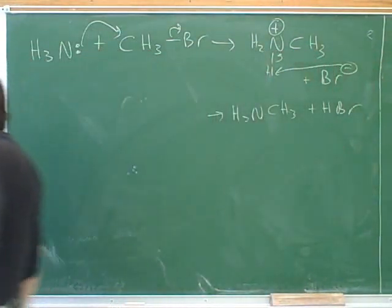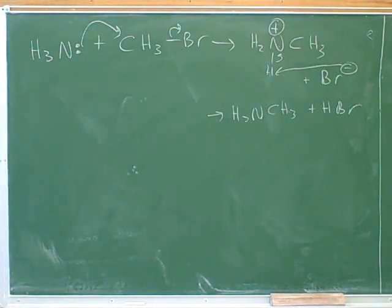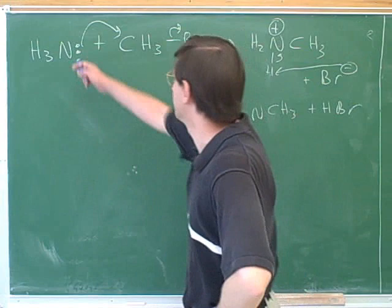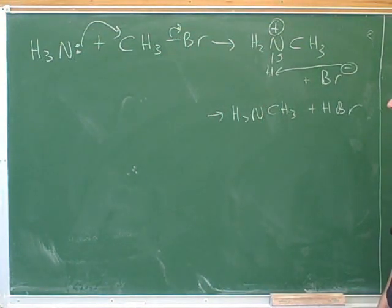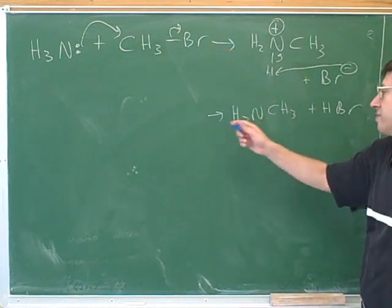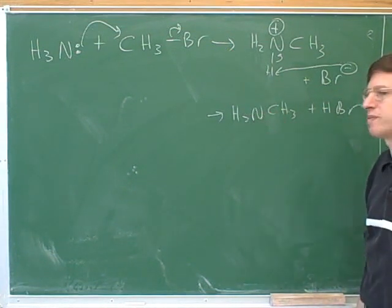Remember that whenever we learn a new functional group, the first thing we learned is how to synthesize it, how to make it. Well, what we just learned is one way to make amines, right? What we just learned is how to make a primary amine. We've seen how to start with ammonia and make a primary amine. So all the way back last term when you were learning about SN2, you might not have realized it, but you were learning how to make amines. This is a logical way to make an amine. You can just use ammonia to attack something.